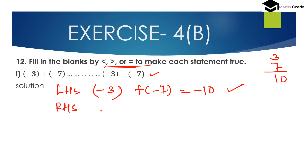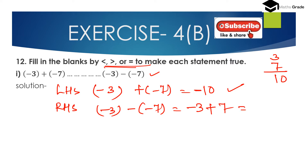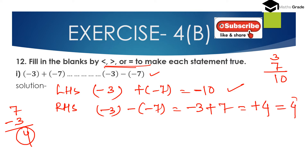Now the right hand side value is minus 3 minus of minus 7. Here, minus of minus 7 becomes plus 7, so we have minus 3 plus 7. Both are of opposite sign; smaller integer is 3 so we subtract: 7 minus 3 is 4. We place the sign of the bigger integer, which is 7 and positive, so the result is positive 4. Right hand side value is 4.